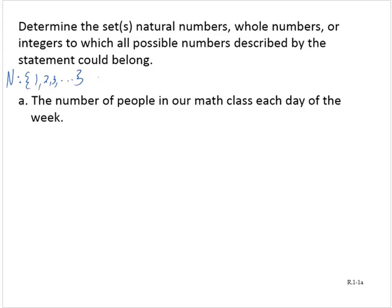The whole numbers, which I'll abbreviate W, the whole numbers are the natural numbers and 0. So 0, 1, 2, 3, and so on.